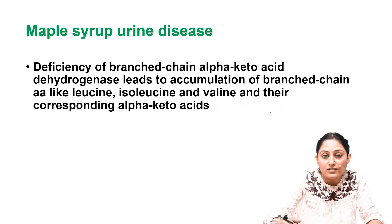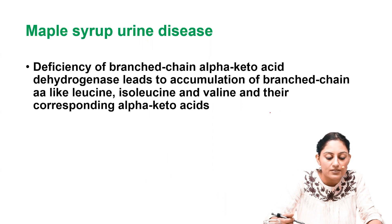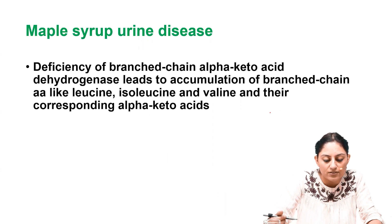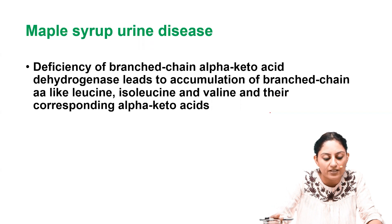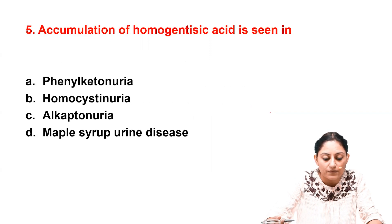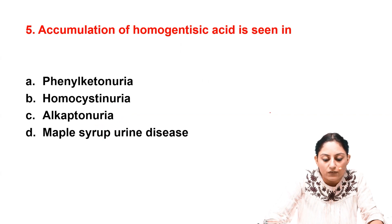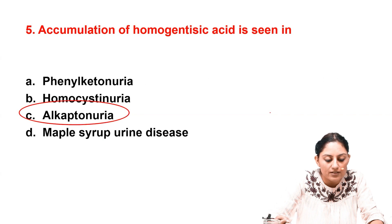Maple syrup urine disease involves deficiency of branched-chain alpha-keto acid dehydrogenase, leading to accumulation of branched-chain amino acids such as leucine, isoleucine, and valine, along with their corresponding alpha-keto acids. In summary, the accumulation of homogentisic acid is seen in alkaptonuria.